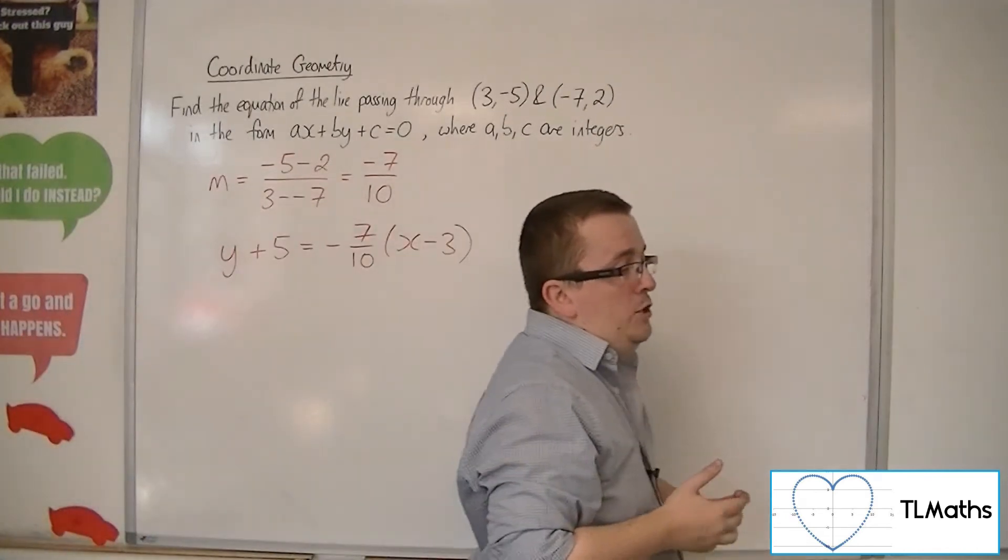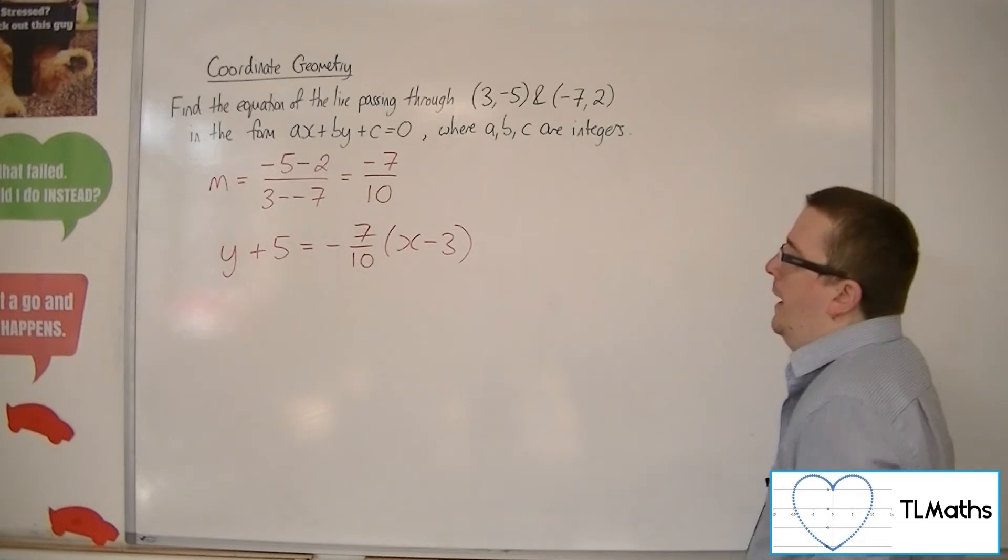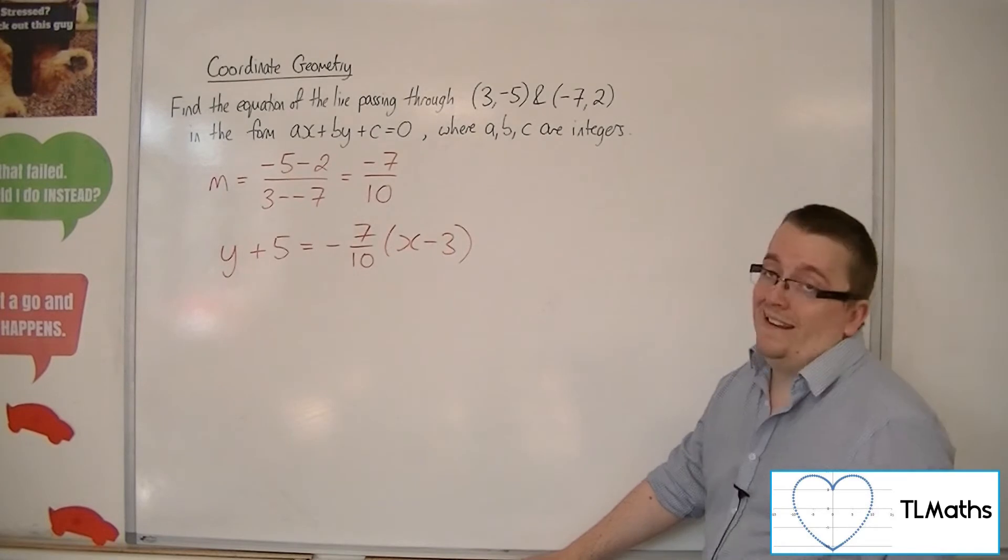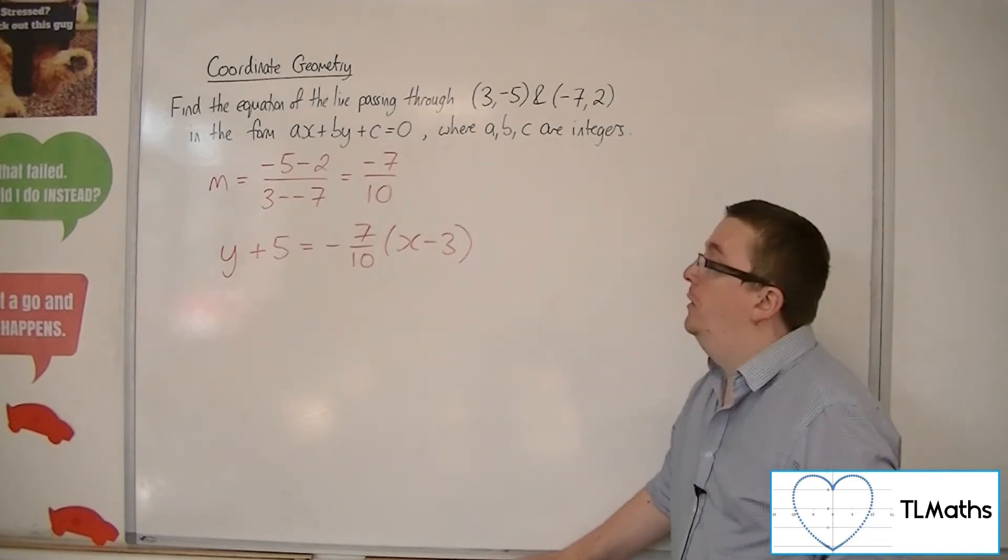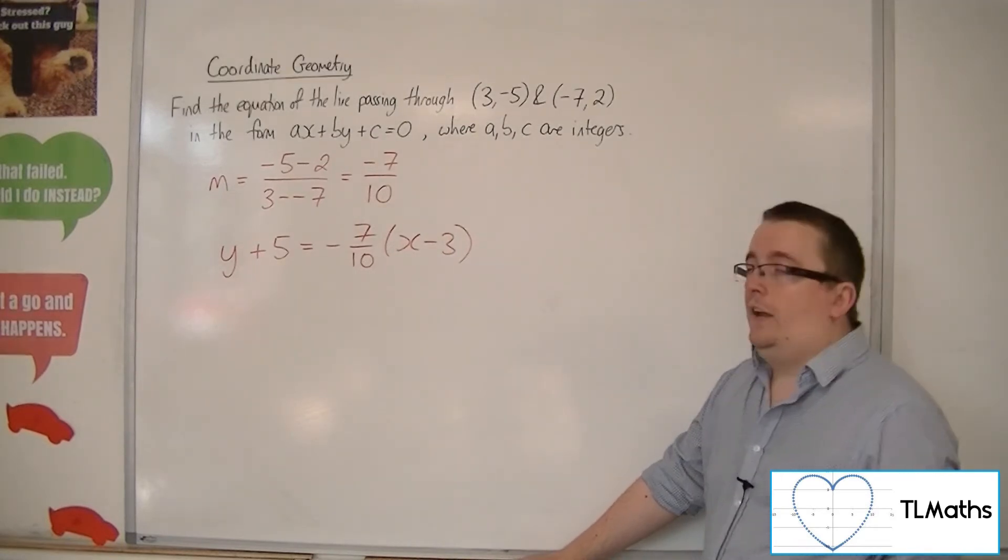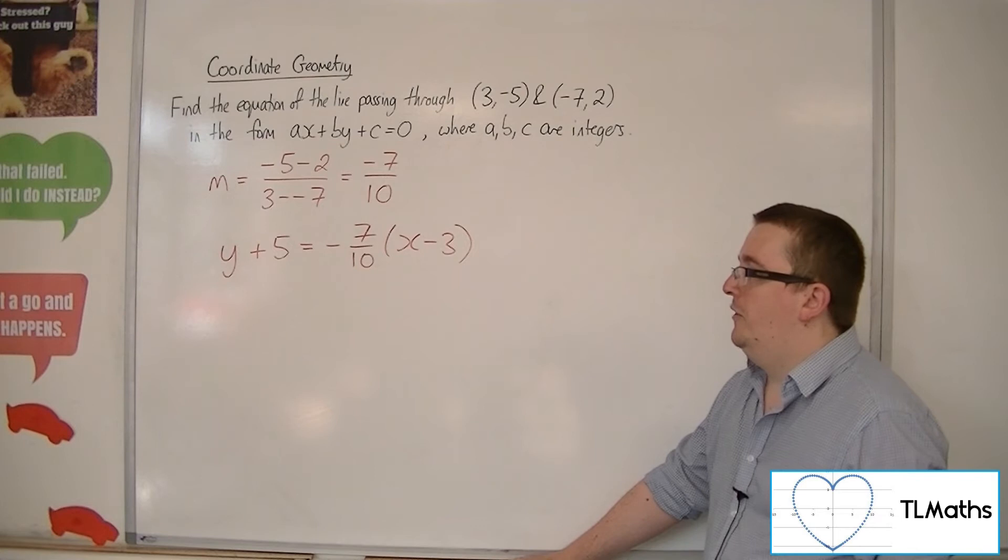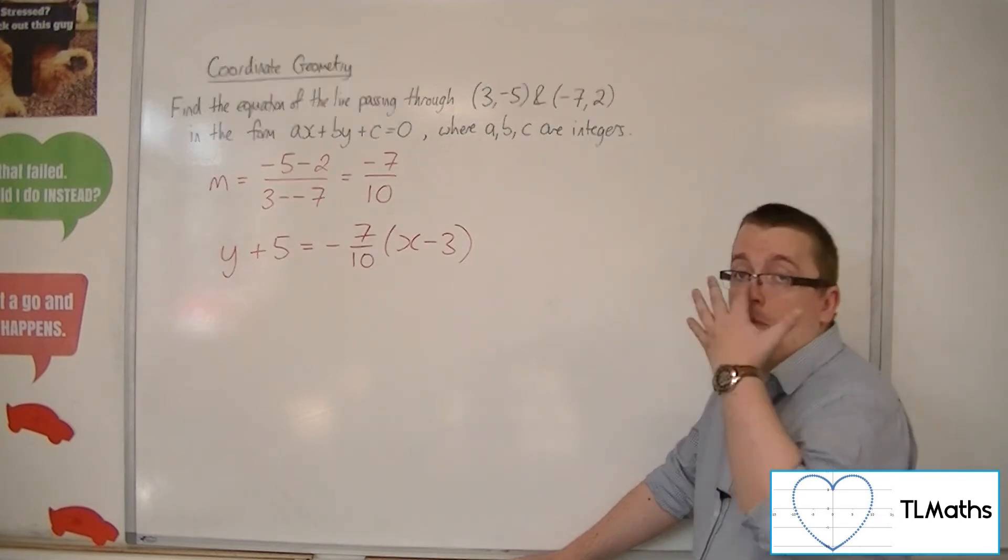Now at this stage, I wouldn't particularly advise multiplying out the bracket and getting it to y equals mx plus c form, and then dealing with it that way. It's faster to deal with it in its current form. So because we've got that -7/10, it's going to cause problems with the fractions.